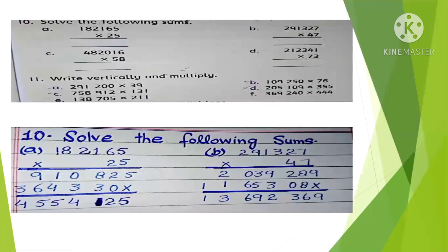Question 10: Solve the following multiplication sums. Write the question in the notebook and multiply. 5 times 5 is 25 — write 5, carry 2. 5 times 6 is 30 plus 2 is 32 — write 2, carry 3. 5 times 1 is 5 plus 3 is 8. 5 times 2 is 10 — write 0, carry 1. Then 5 plus 4 is 9. Similarly multiply 2 with all digits, then add the results vertically.